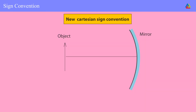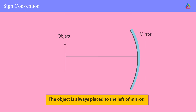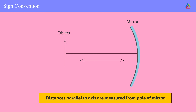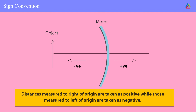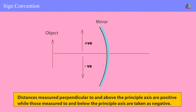The new Cartesian sign convention for reflection by spherical mirrors: the pole of the mirror is taken as the origin and the principal axis as the x-axis. The conventions are: one, the object is always placed to the left of the mirror; two, distances parallel to the axis are measured from the pole; three, distances measured to the right of the origin are positive while those to the left are negative; four, distances measured perpendicular to and above the principal axis are positive, while those below are negative.